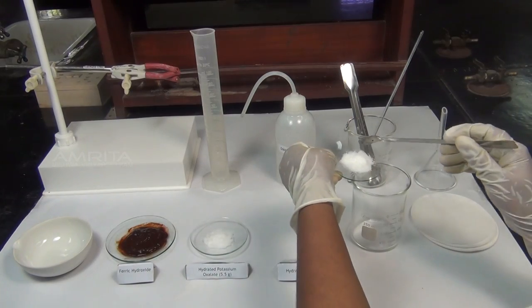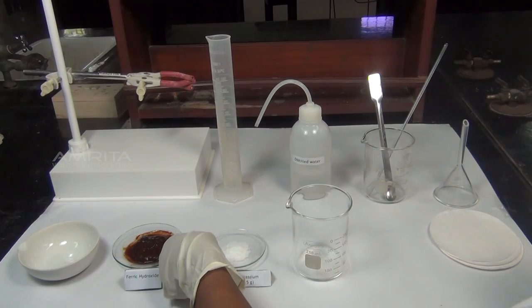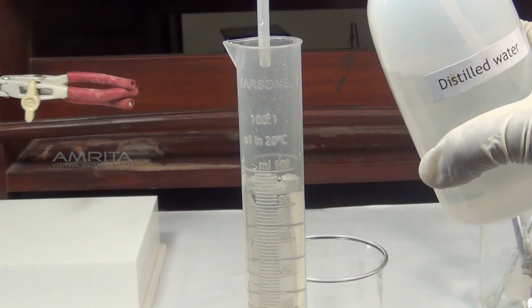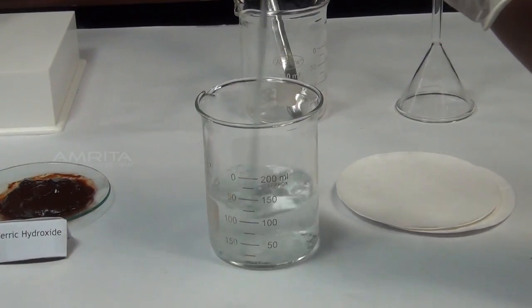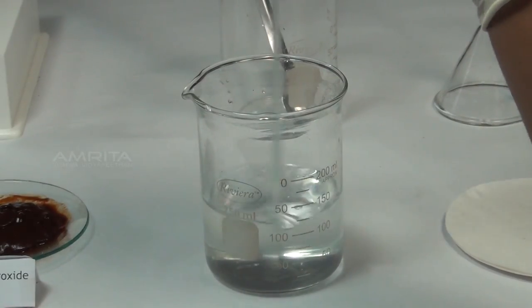In another beaker, take 4 g of hydrated oxalic acid and 5.5 g of hydrated potassium oxalate. To this add about 100 ml distilled water. Stir the solution thoroughly using a glass rod to get a clear solution.